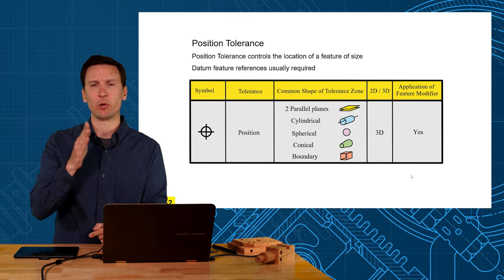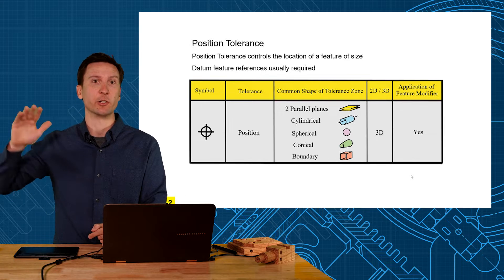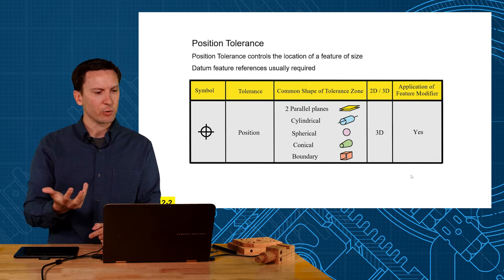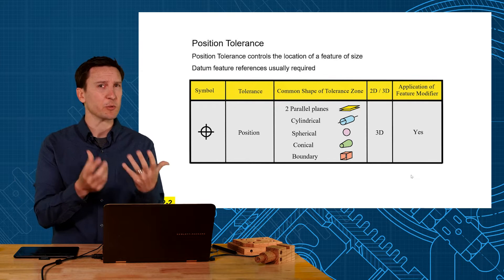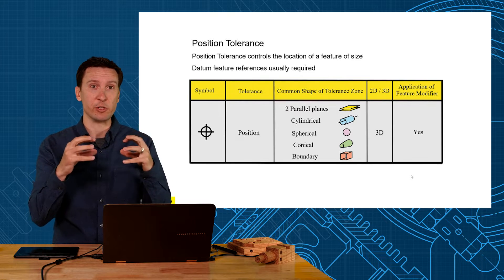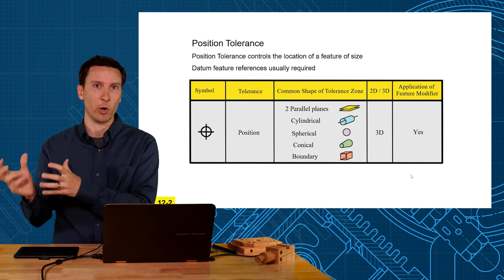If you feel like you want to control the location of a surface, then you're going to use profile tolerance instead. Now datum feature references are usually required. You have position to your datum reference frame, but there are some special cases where you can position features to themselves only with no datum references.